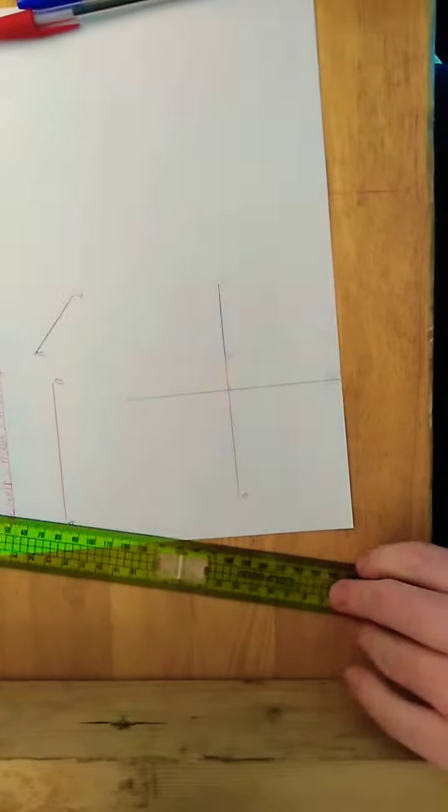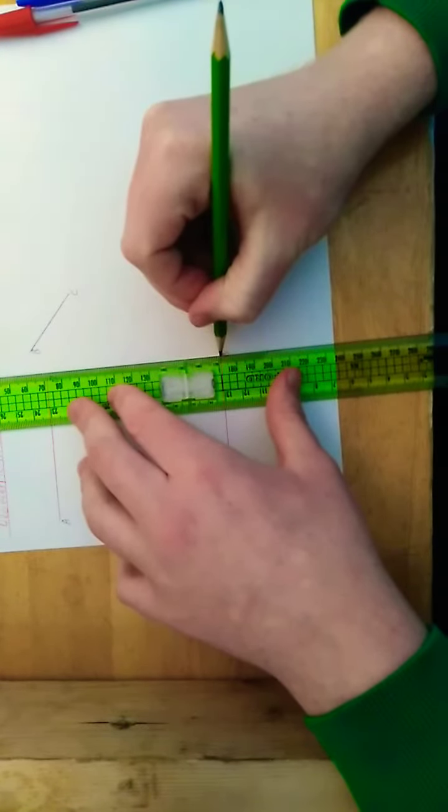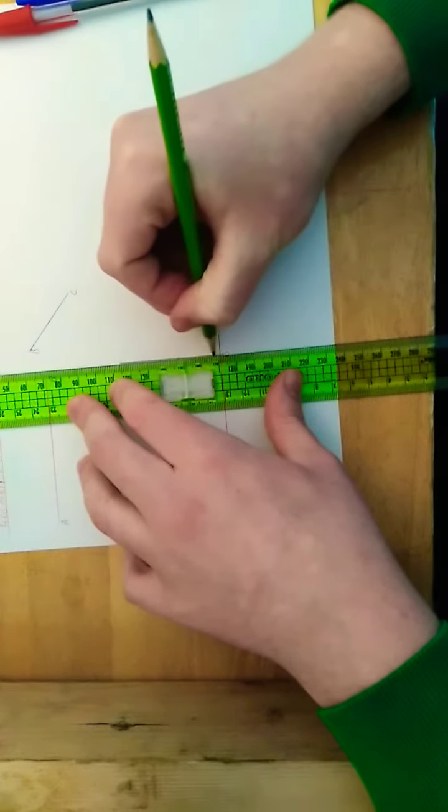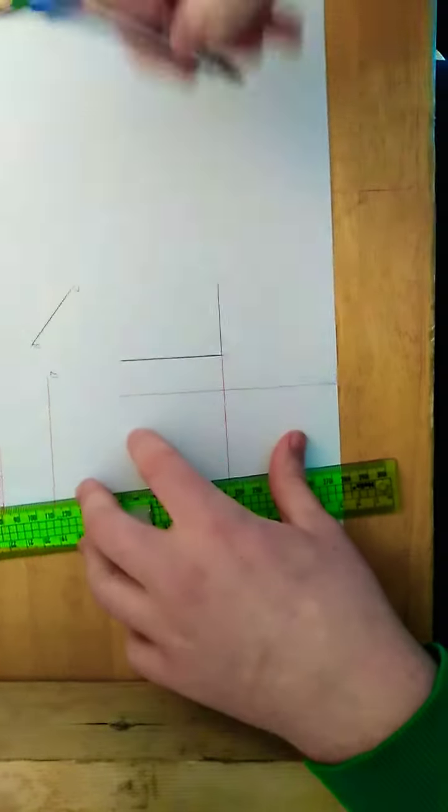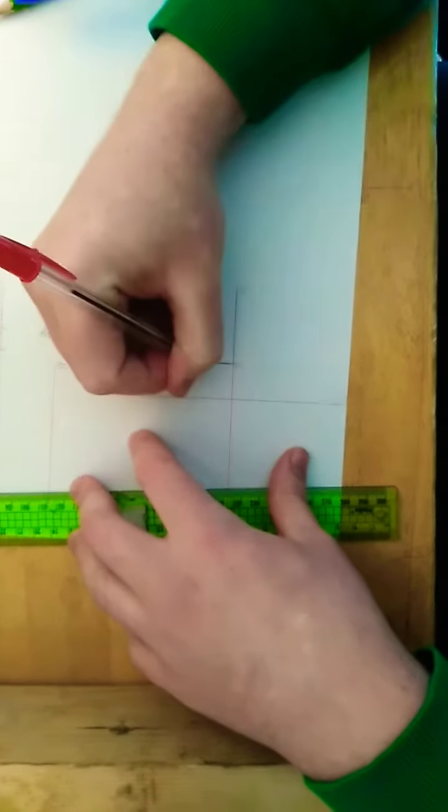And then draw a line straight up from b, straight up to intersect. And this length here from b to this point here is your geometric mean.